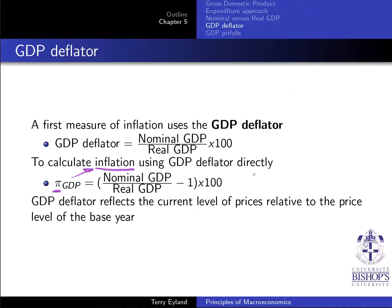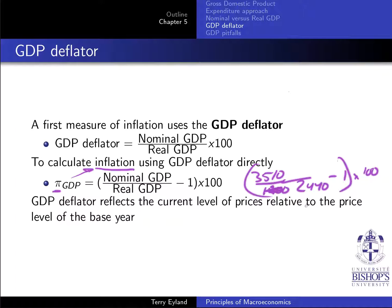In this case, on the next slide, it's going to be 3510 over the real GDP of 2440 — not the 1900. So you see, that's one of the mistakes you could easily make. So that over that, minus one, and this whole amount times 100 will give me my inflation using the GDP deflator approach.